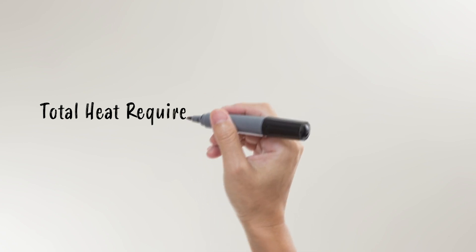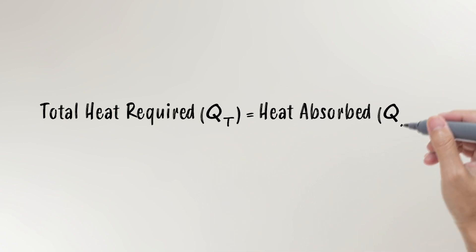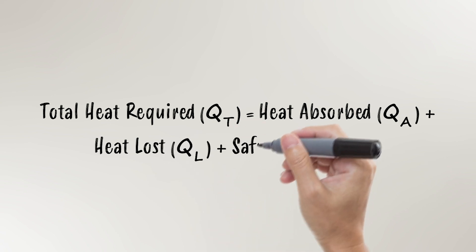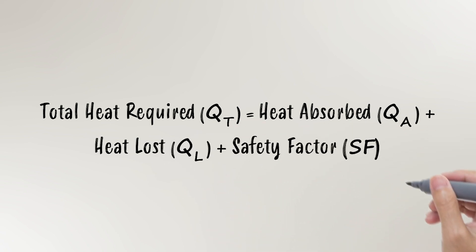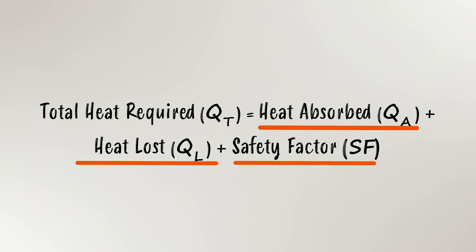Let's start with the total heat equation. The equation is: total heat required equals heat absorbed plus heat loss plus the safety factor. This equation has three different components, and we'll cover each one so that you can determine exactly how to calculate the total energy required in kilowatts for your application.